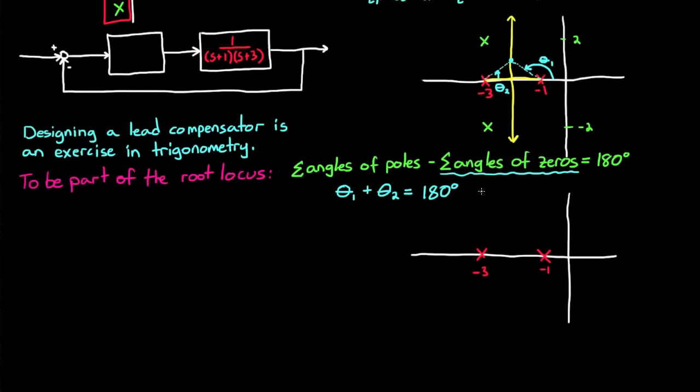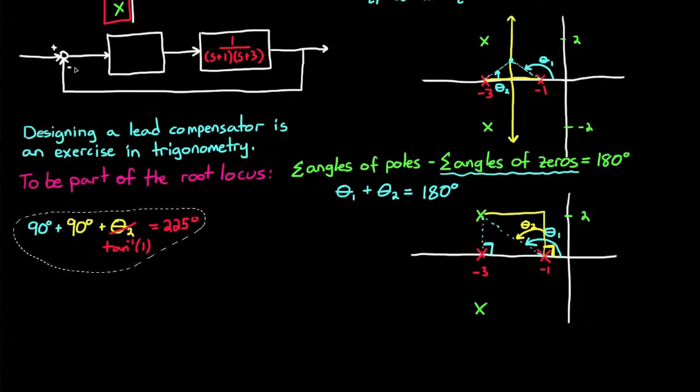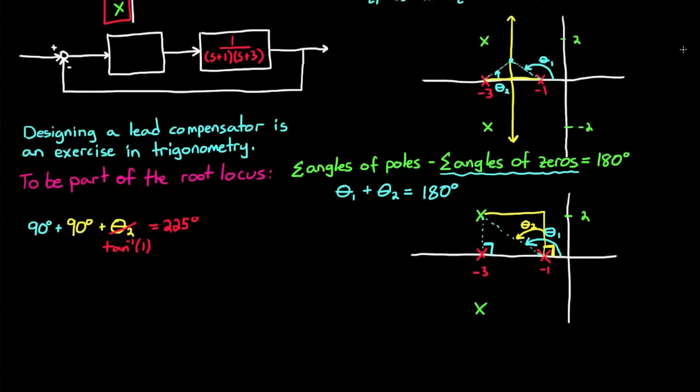Let me redraw this here again. But this time I'm going to draw my desired pole location instead of an actual pole location. Now I can redraw my lines and then recalculate my two angles. The angle on the left is just 90 degrees, and the angle on the right, which I'm calling theta 1, is just 90 degrees plus this angle in the triangle, which I'll call theta 2. And when we add all of these angles up, we get 90 degrees plus 90 degrees plus whatever theta 2 is, which is just the inverse tangent of 1, and this whole thing sums up to 225 degrees. And since 225 is not 180 degrees, we know that this point is not on the root locus. Not surprising.